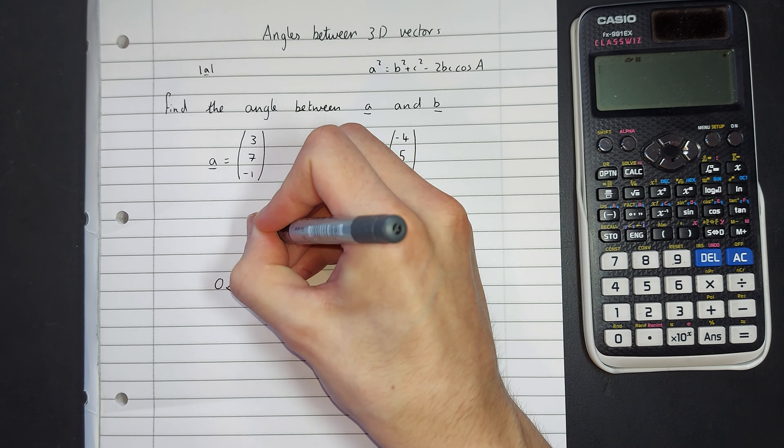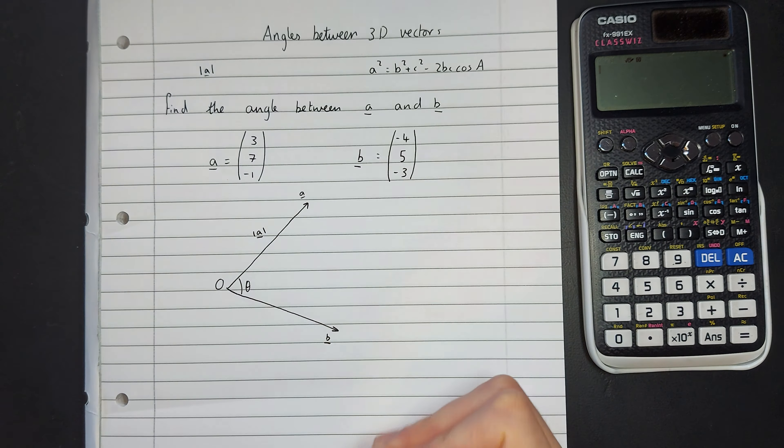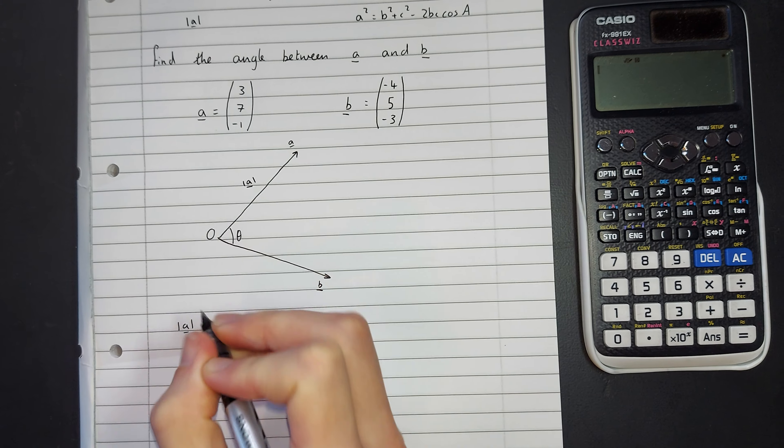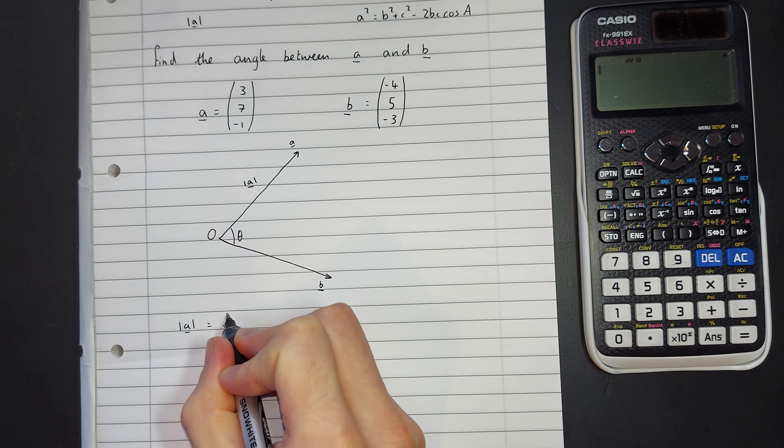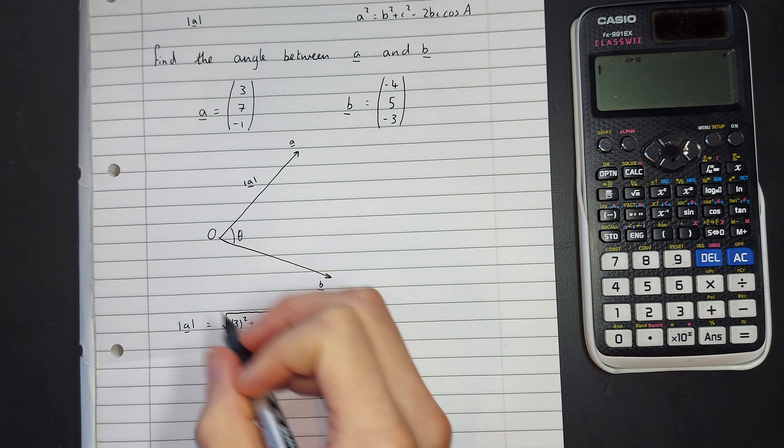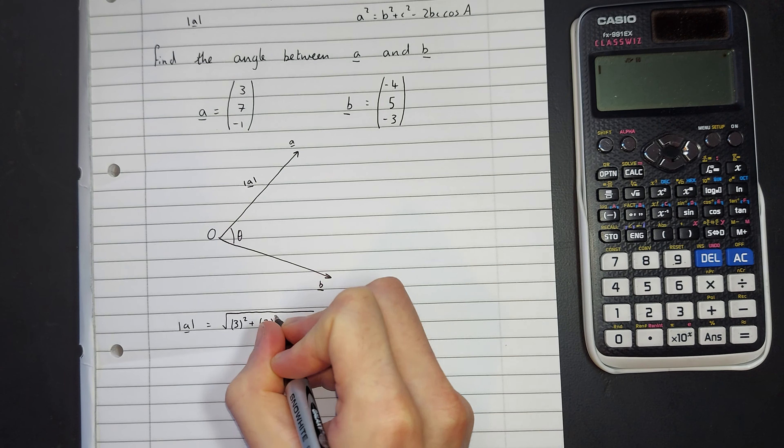We're going to have to find out this length here, which is going to be the magnitude of A. So, let's do a little bit of calculations underneath. So, the magnitude of A, we're doing Pythagoras in 3D here. So, you've got the square root of 3 squared, put it in brackets, plus 7 squared, plus negative 1 squared. Into your calculator, we've got 9, add 1, add 49, root 59. This is going to be root 59. Leave it as a surd so it's exact, then right at the end we can round to get our answer.